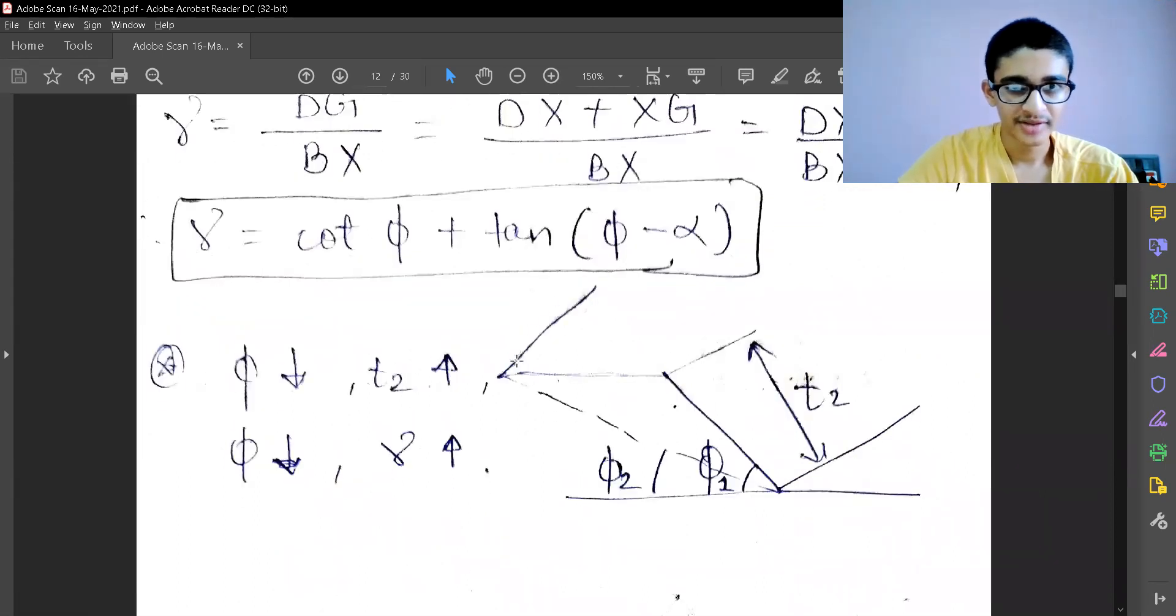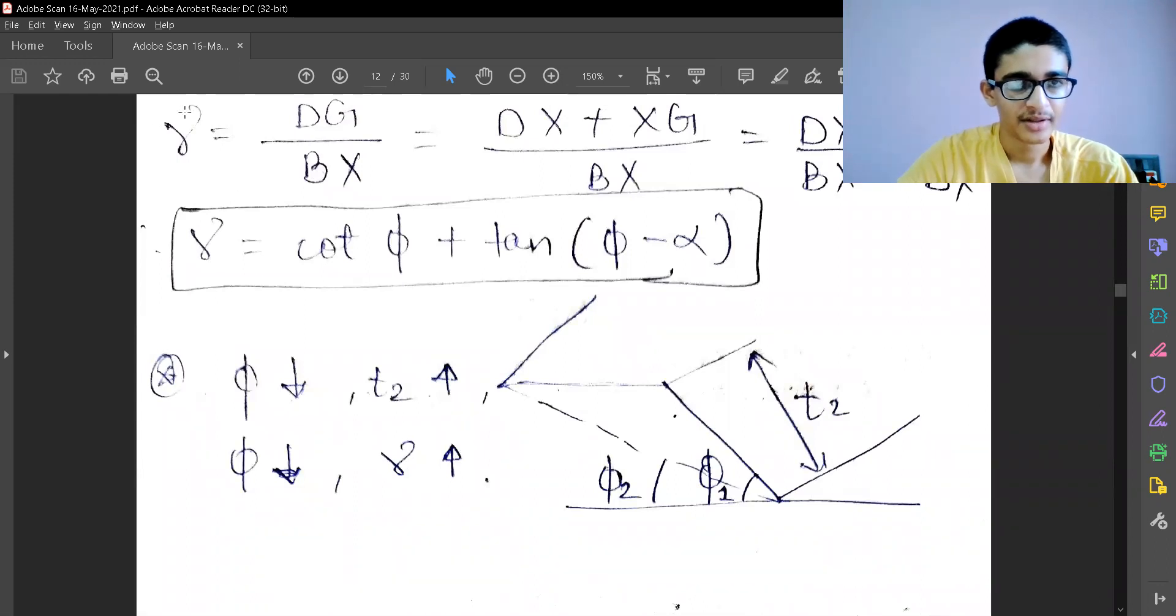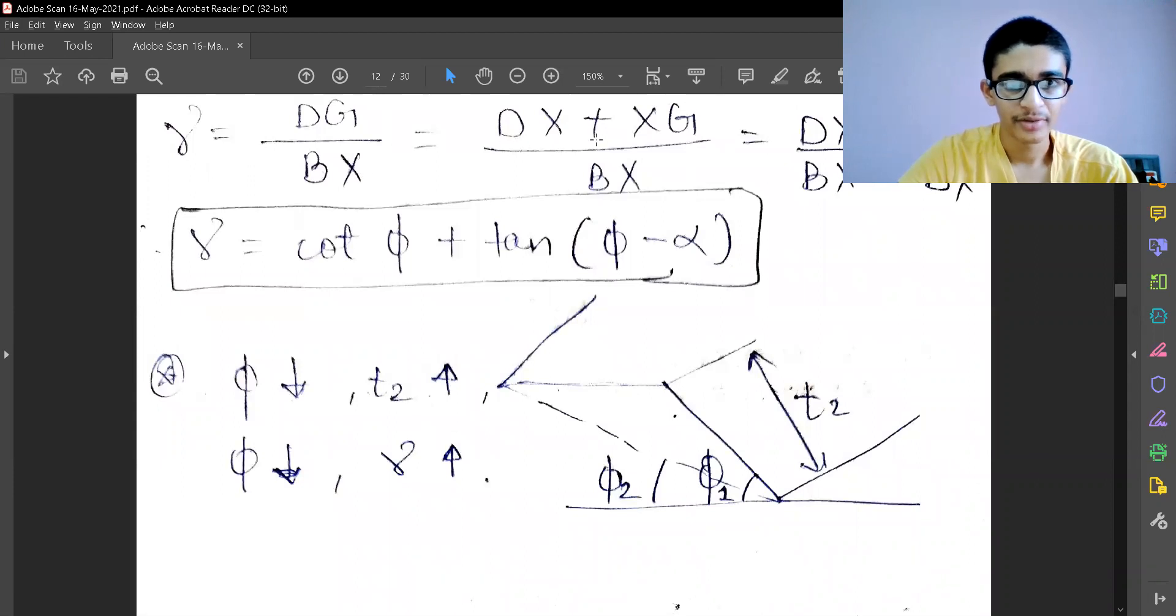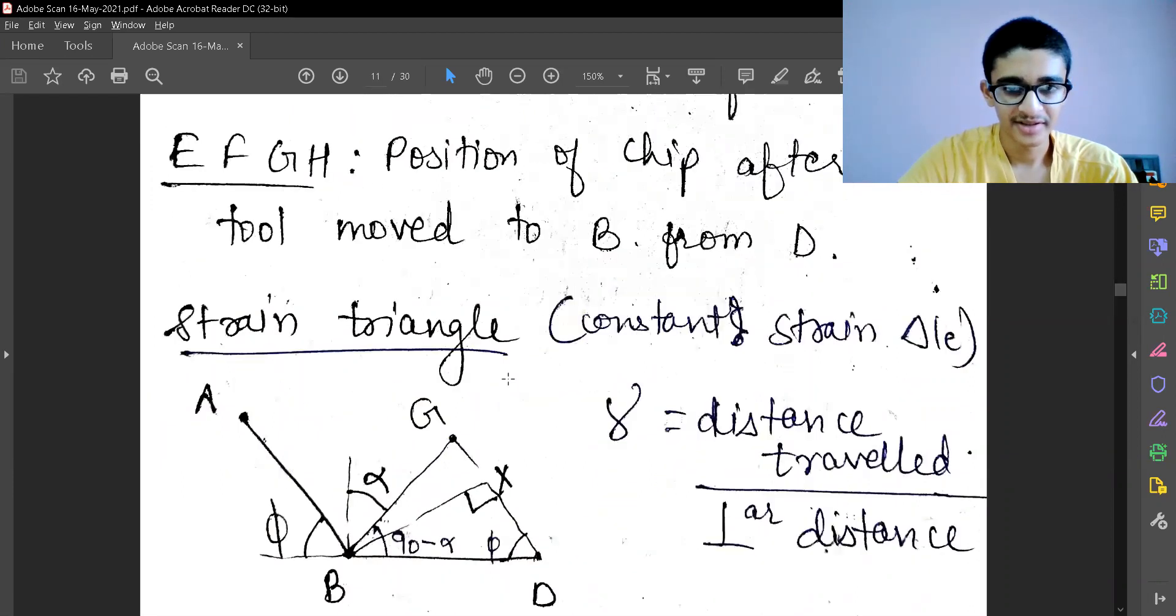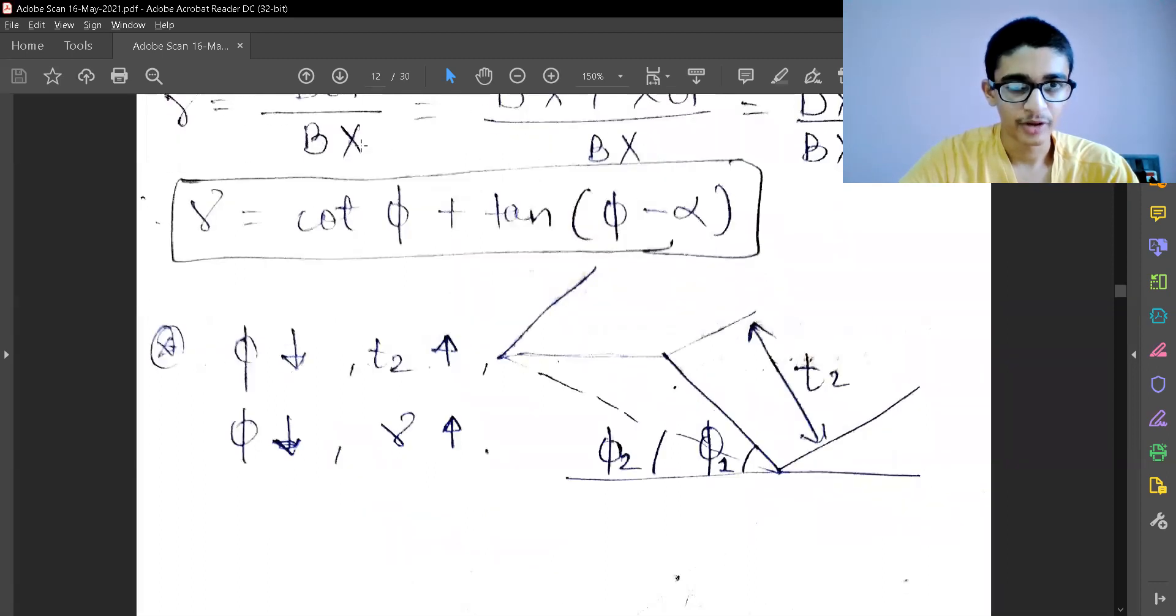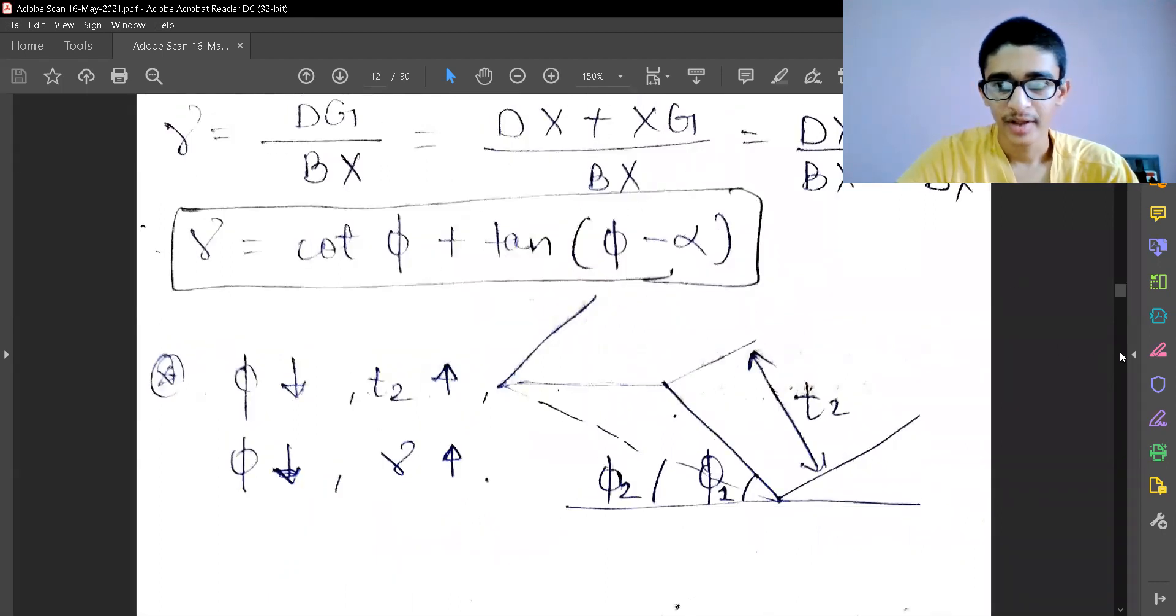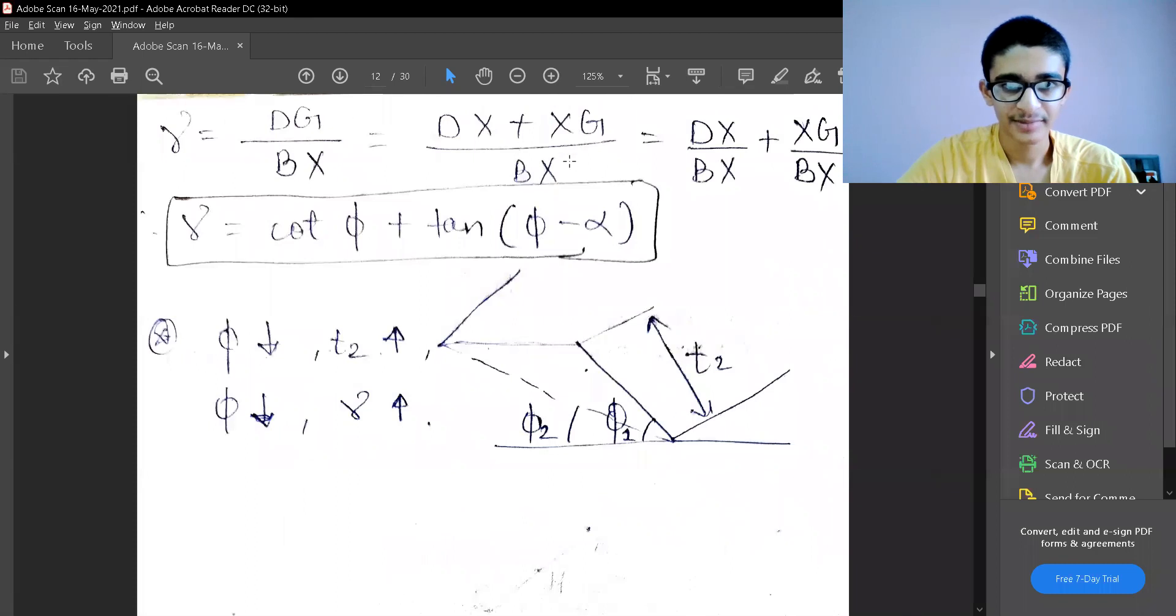Using that triangle, the strain by this definition is DG by BX equals DX plus XG divided by BX. DG is the distance traveled, and BX is the perpendicular distance. From trigonometry, I'm getting CL strain gamma equals cot phi plus tan of phi minus alpha.